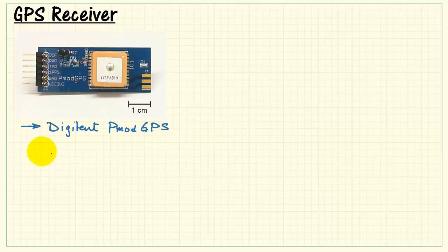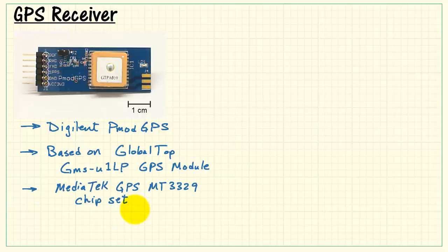This is the Digilent PMOD GPS. It's based on this product from Global Top, a self-contained GPS module. The module in turn is based on the MediaTek MT3329 chipset.